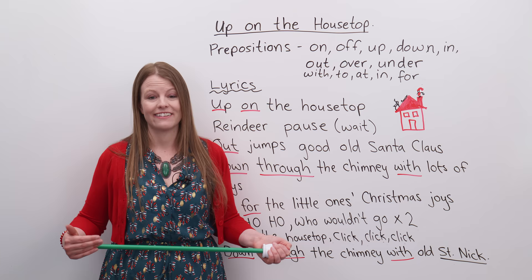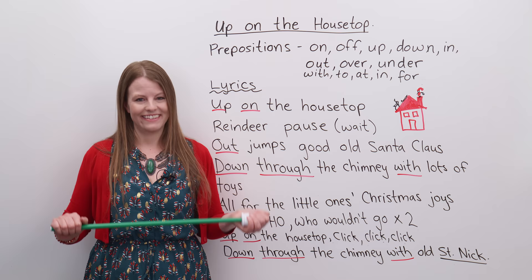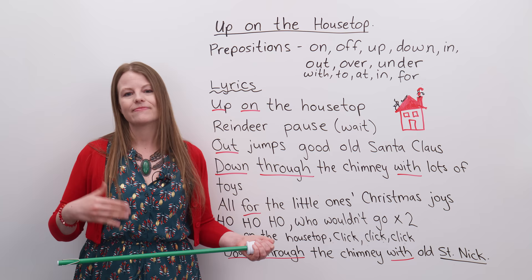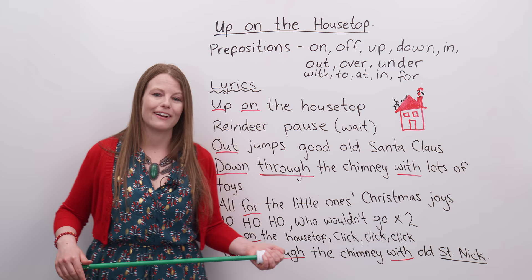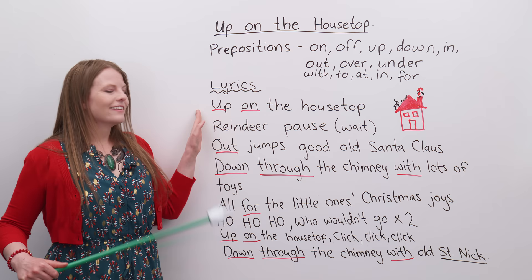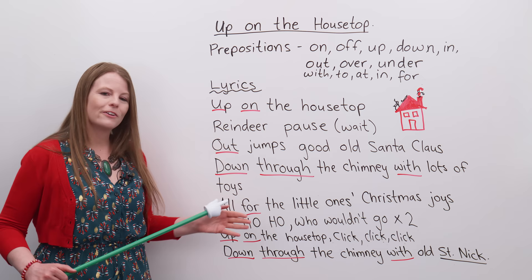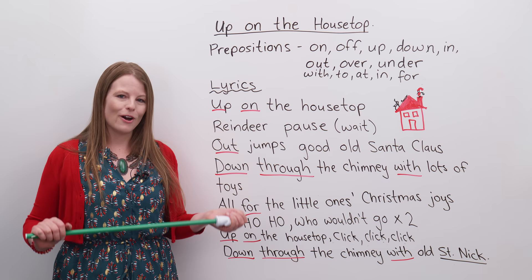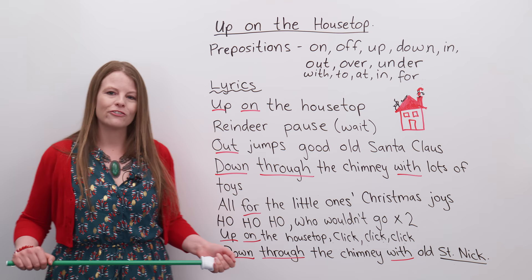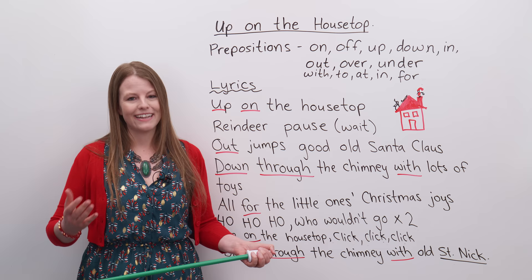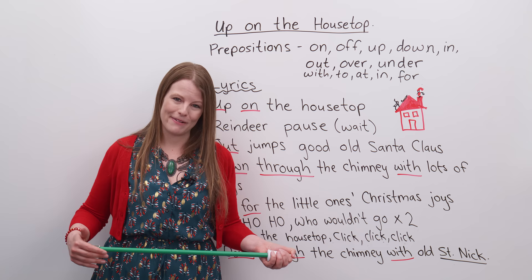So we've talked about the song, now let's sing it. You can listen to me sing it first, then play it again and sing with me. Up on the housetop, reindeer pause. Out jumps good old Santa Claus. Down through the chimney with lots of toys. All for the little one's Christmas joys. Ho, ho, ho! Who wouldn't go? Ho, ho, ho! Who wouldn't go? Up on the housetop, click, click, click. Down through the chimney with old Saint Nick. If you want to hear a better version, look it up on YouTube.